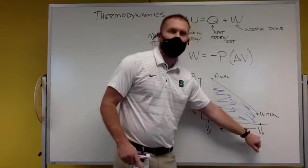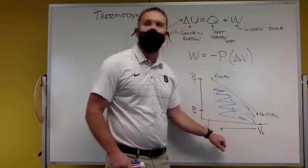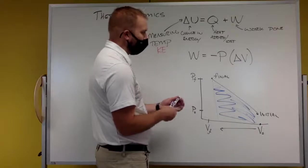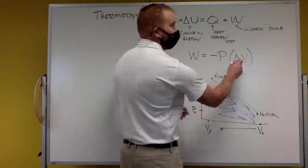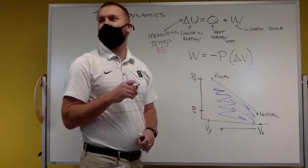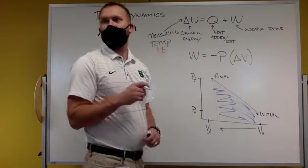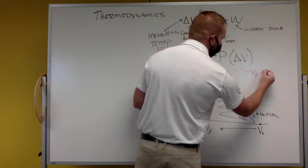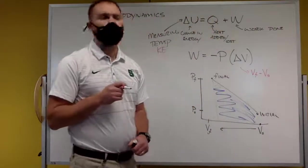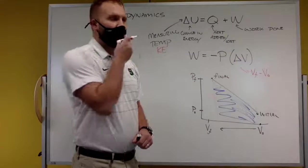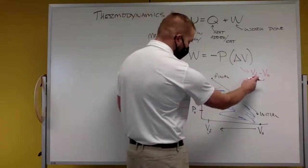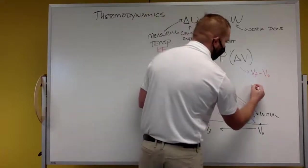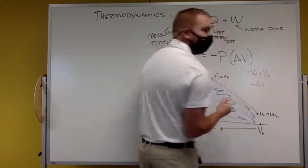We did a volume change from a big volume to a small volume. So what is my change in volume for the fire syringe? Is it positive or negative? Negative — change in volume is volume final minus volume initial. For the fire syringe, we went small minus big, which is a negative change in volume.